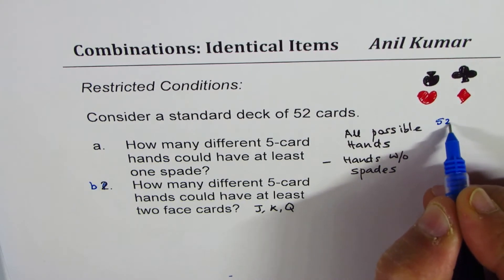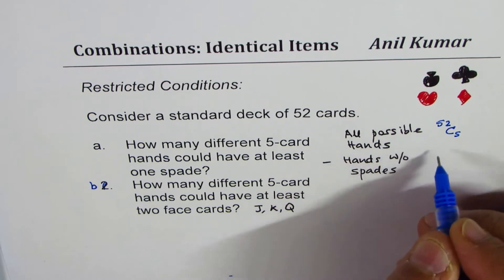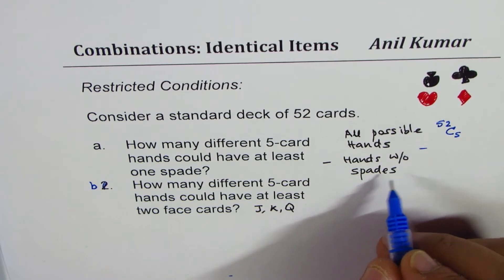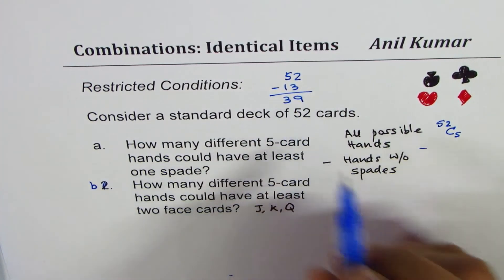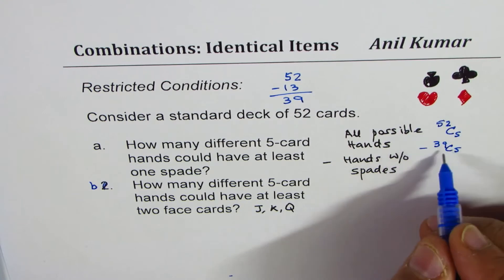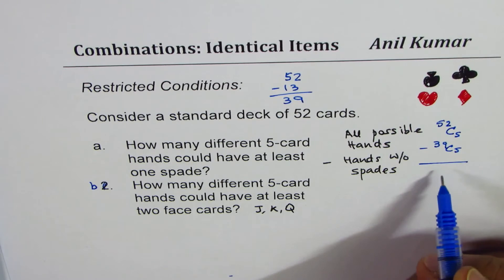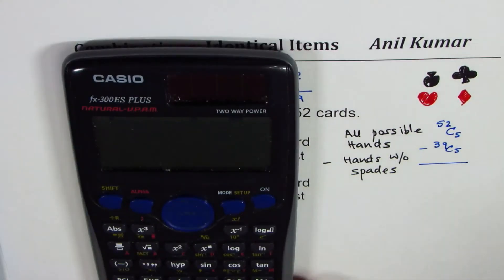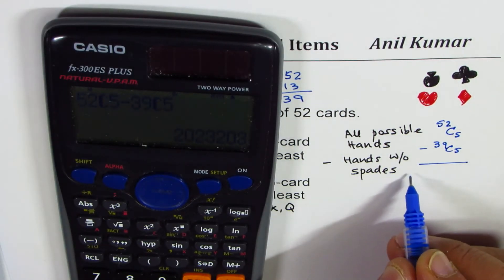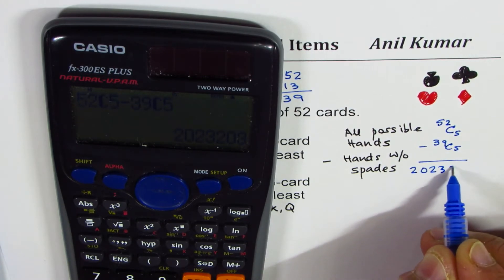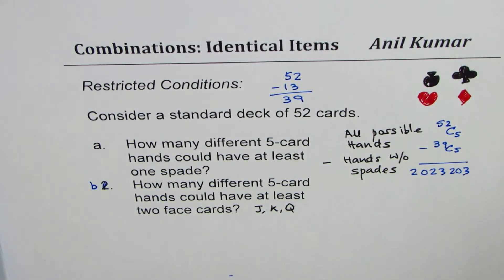Since there are 52 cards and we are dealing 5 to each, 52C5 gives all possible hands. We take away hands without spades — if we remove the 13 spade cards, we are left with 39 cards, so 39C5 gives hands with no spade cards. That difference gives us the answer: 52C5 minus 39C5 equals 2,023,203. So that becomes the answer for Part A.